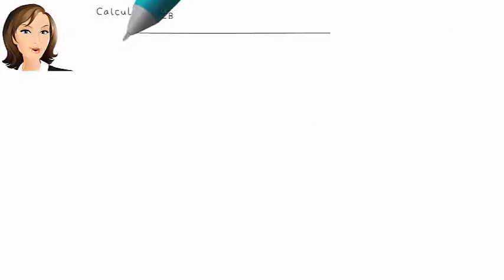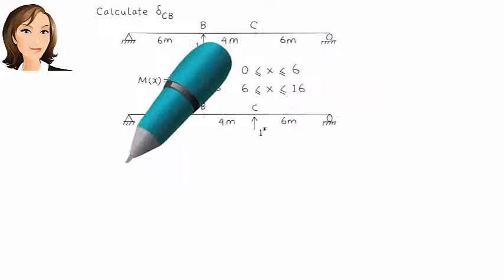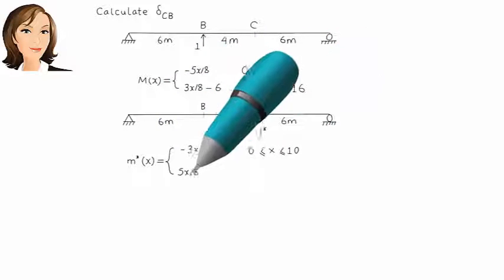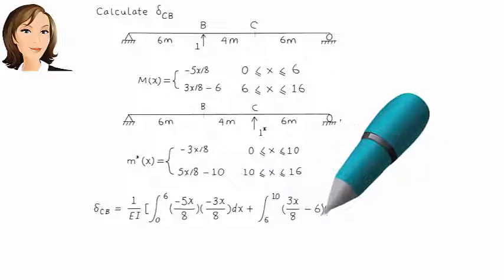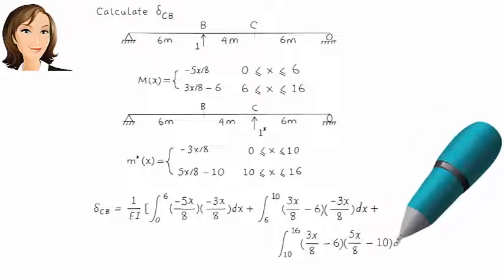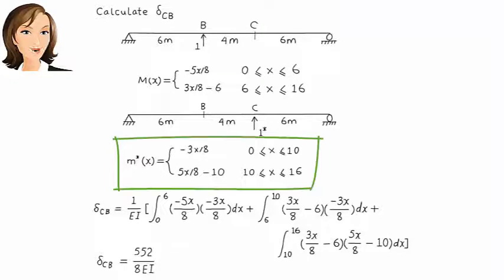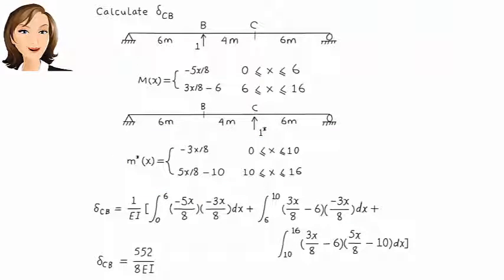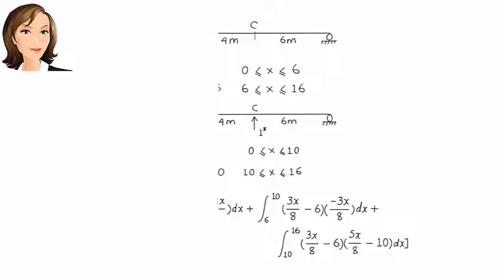Finally, we calculate delta C,B — the vertical displacement at C due to a vertical unit load at B. What we refer to as M when calculating delta B,C becomes M star here, and the M star we used for delta B,C becomes M here. Not surprisingly, delta C,B equals delta B,C.